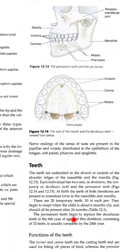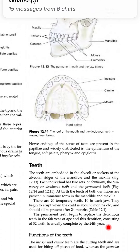The permanent teeth begin to replace the deciduous teeth in the 6th year of age — जो permanent teeth हैं, वो कब आने start होते हैं? जब 6 साल का बच्चा हो जाता है उसके बाद। Consisting of 32 teeth, the permanent dentition is usually complete by the 24th year — usually 24 साल की उम्र तक complete 32 teeth हो जाते हैं।